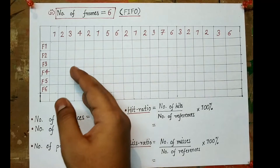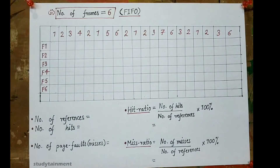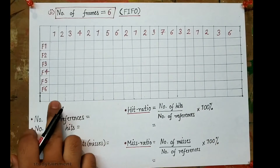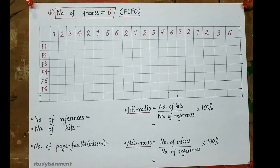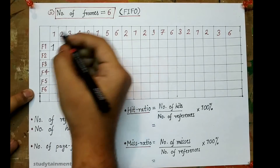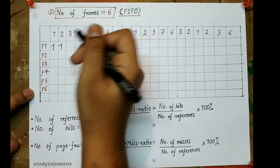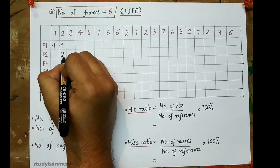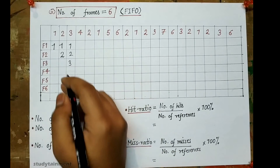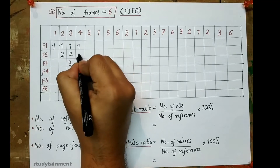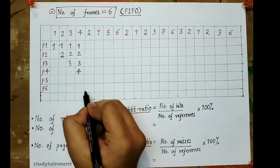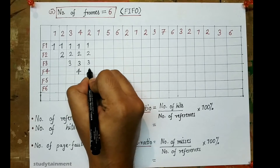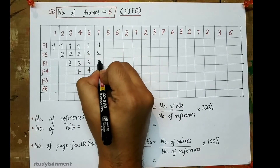Now for the second part of the problem: the number of frames is 6. We apply the FIFO page replacement algorithm and prepare a box with frames F1, F2, F3, F4, F5, and F6, with the same reference string. Initially all frames are empty. Pages 1, 2, 3, and 4 are loaded one by one — each is a page fault since none were present earlier. Then 2 comes and 2 is already present — this is a hit. Then 1 comes and 1 is already present — this is also a hit.